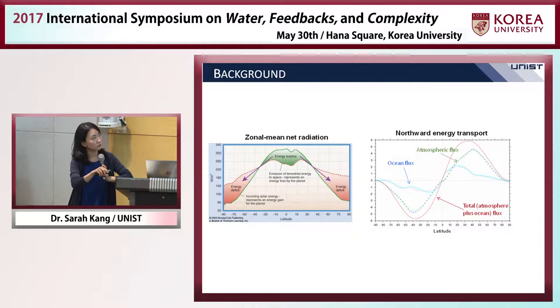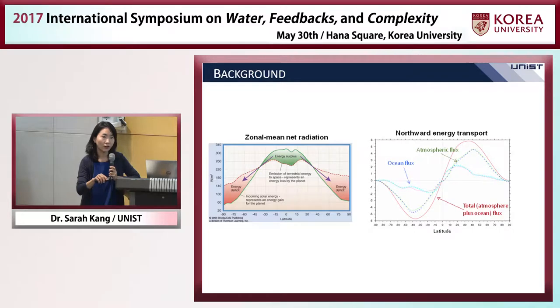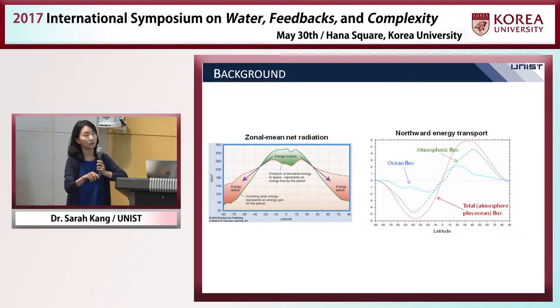This shows the northward energy transport as a function of latitude from South Pole to North Pole. Positive means northward transport — so in the Northern Hemisphere there is northward energy transport, and in the Southern Hemisphere there is southward energy transport. The climate system as a whole transports energy poleward to achieve balance. This is accomplished by both the atmosphere and ocean. We can decompose this transport into the part accomplished by the atmosphere in green and the part by the ocean in blue. In the mid-latitudes, the atmosphere dominates, whereas in the deep tropics, ocean transport is actually more important.